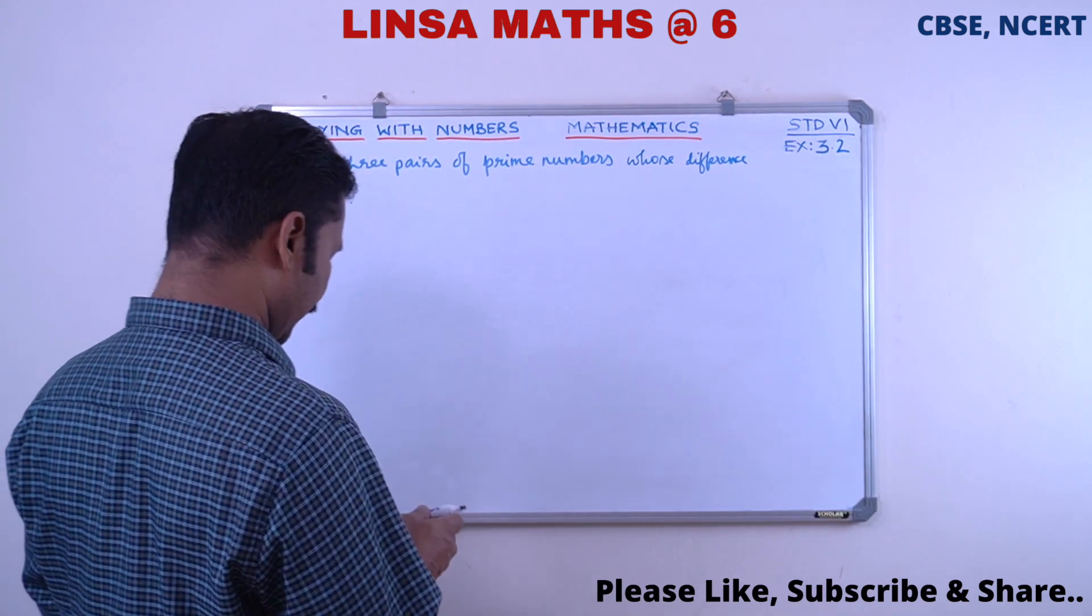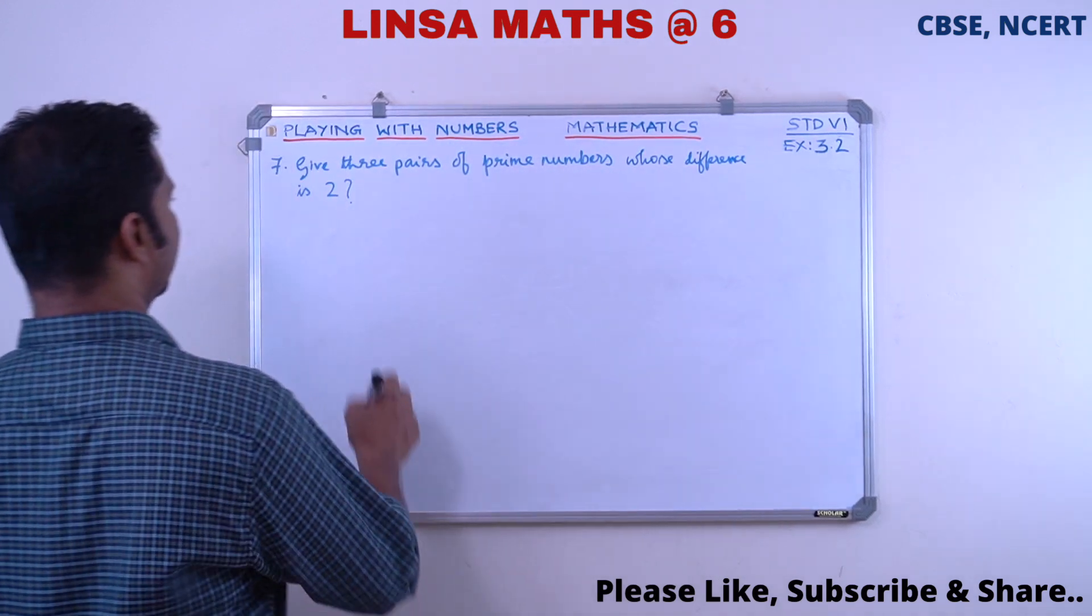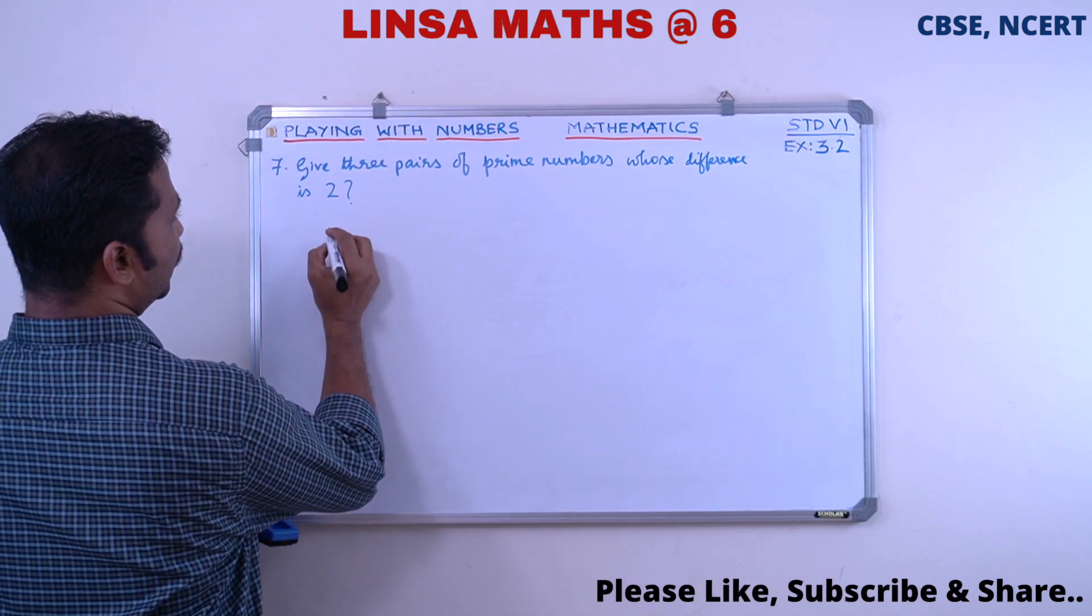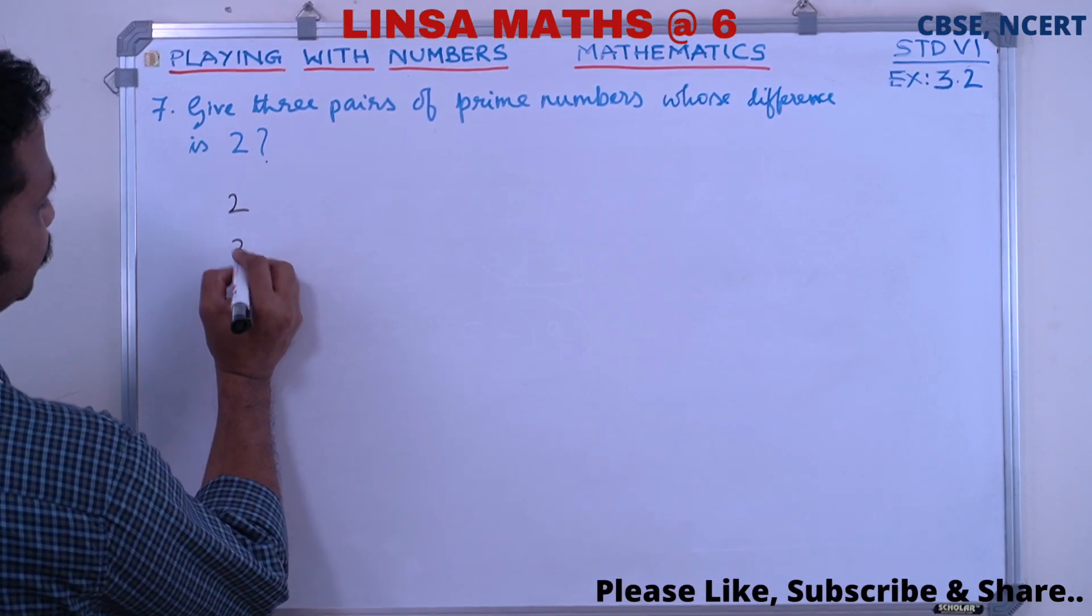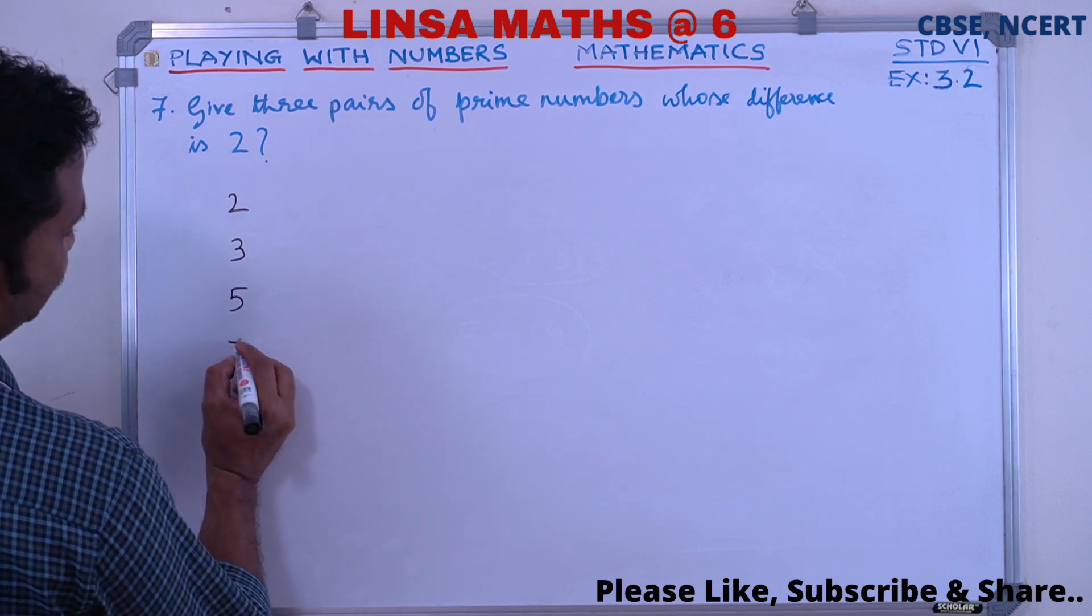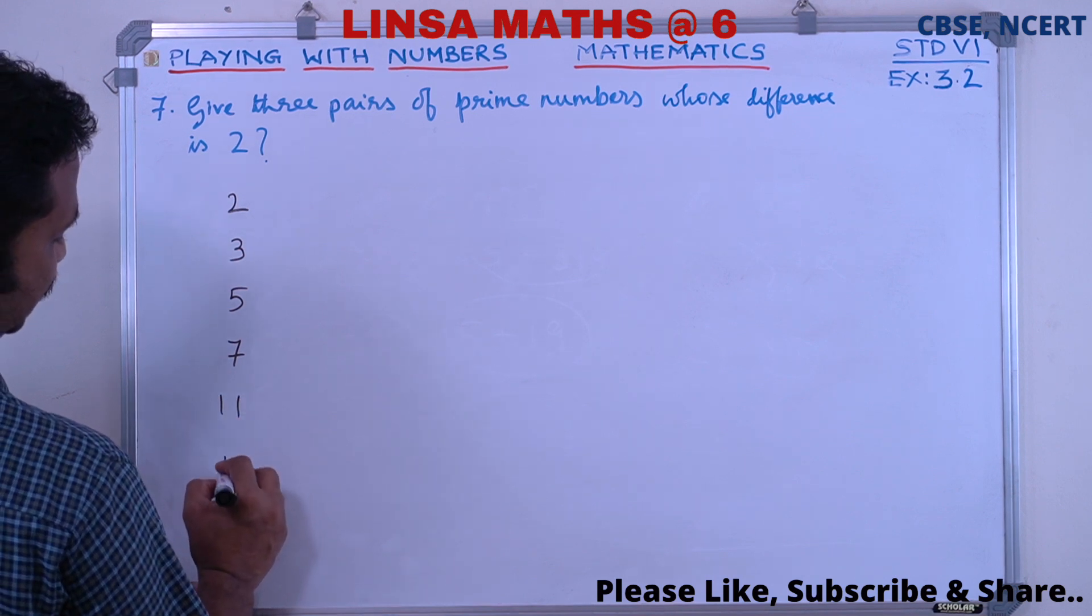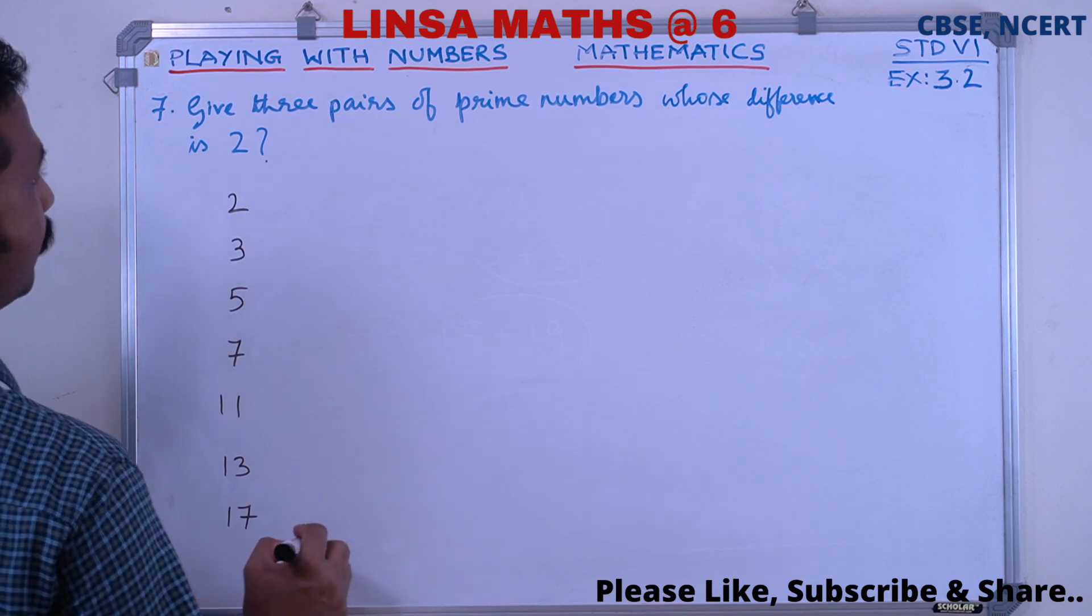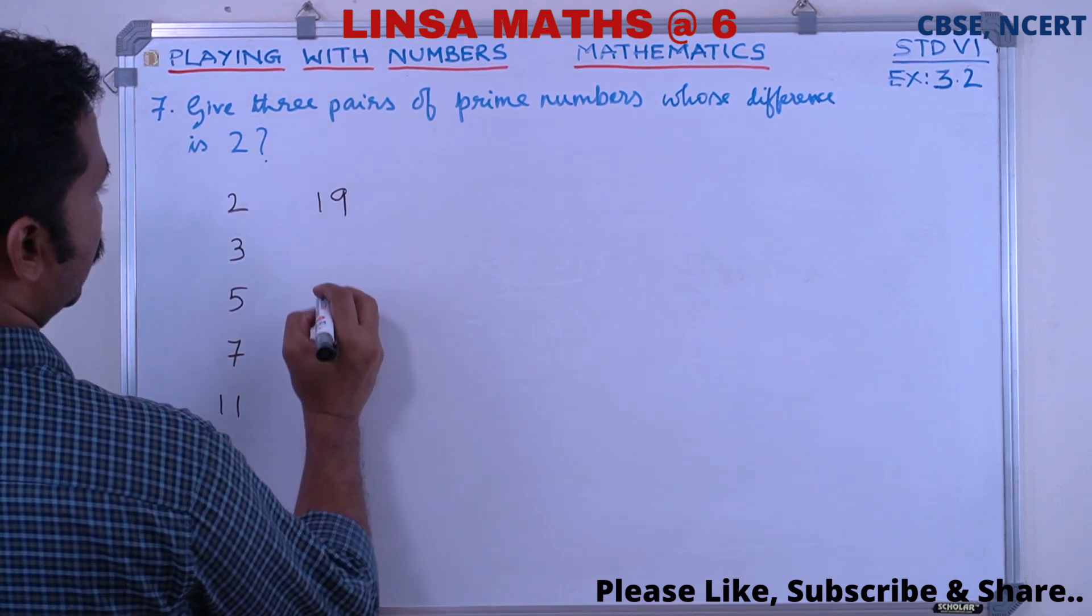Let's list some prime numbers: 2, 7, 13, 17, 19, 23.